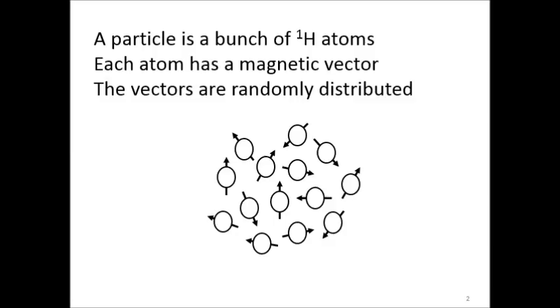Our discussion starts with a particle. Here, a particle of water which has a bunch of hydrogen atoms in it. Each atom has a magnetic vector associated with it due to quantum effects. Normally, those vectors are distributed randomly so that the net magnetic vector is zero.